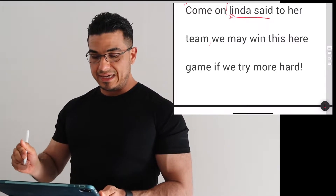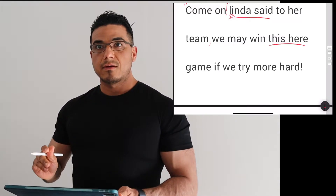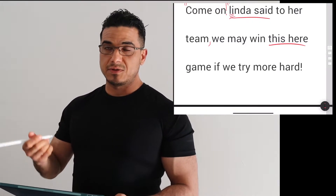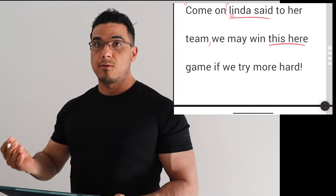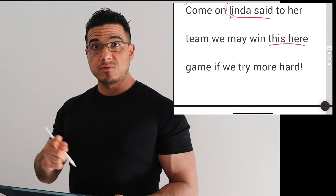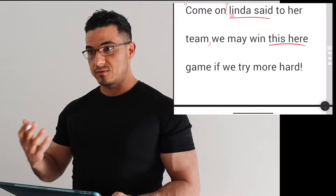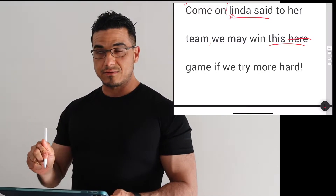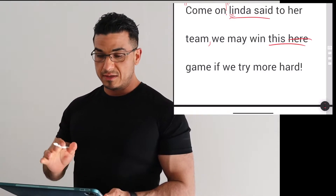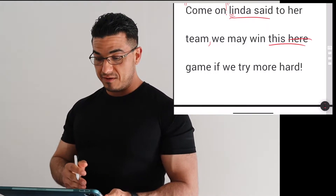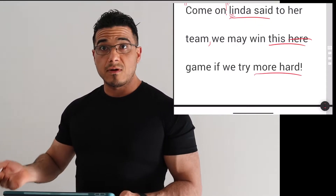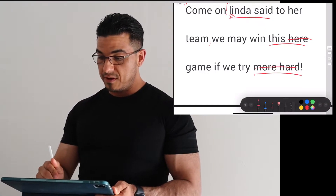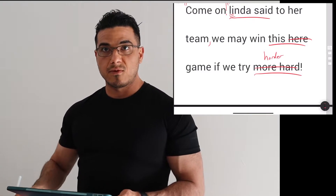We may win this here game. Now, "this" and "here" are redundant. "This" implies a specific moment or instance. "Here" is doing something similar — referring to a specific location or instance. Rather than use both simultaneously, which is redundant and repetitive, I'm going to strike "here" and use instead the word "this." So it reads: we may win this game if we try — and then here I have "more hard." So "harder" — we're going to combine those two into "harder." If we try harder, not more hard.